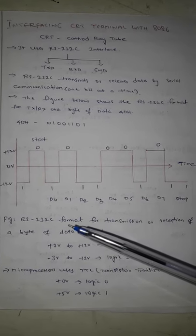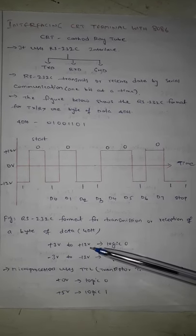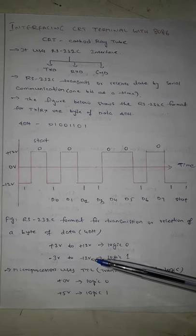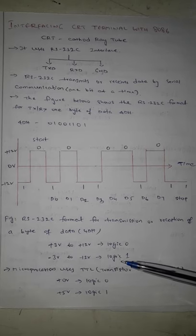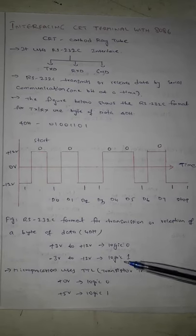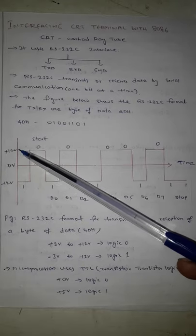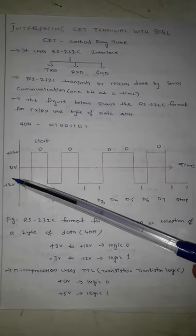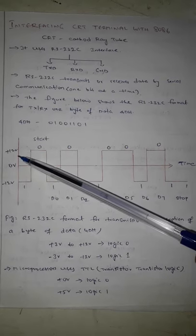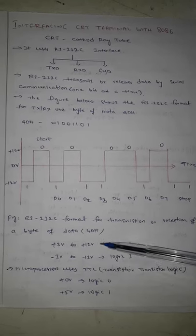In RS-232 format, logic 0 is represented by a voltage level of +3 to +12 volts, and logic 1 is represented by -3 to -12 volts. So if transmitting -3 to -12 volts, it is treated as 1, and if transmitting +3 to +12 volts, it is treated as 0. This is called negative logic, since a negative voltage represents 1 and a positive voltage represents 0.